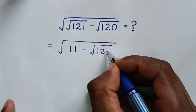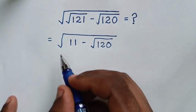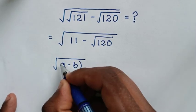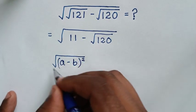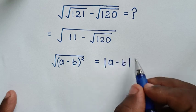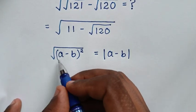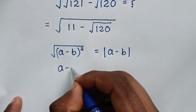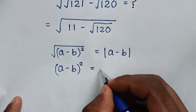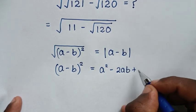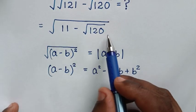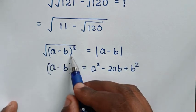In the next step, we express this in the form of √(a - b)², where √(a - b)² equals |a - b|, meaning the value should be positive. The expansion of (a - b)² is a² - 2ab + b². We start to express the expression under the square root in this form.